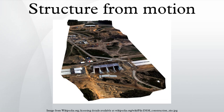Structure from motion is a range imaging technique. It refers to the process of estimating three-dimensional structures from two-dimensional image sequences, which may be coupled with local motion signals. It is studied in the fields of computer vision and visual perception.